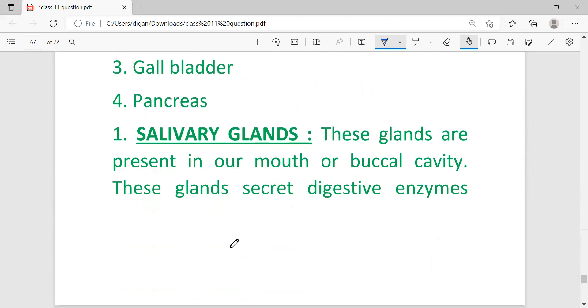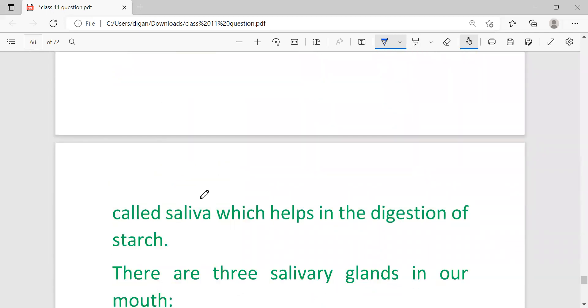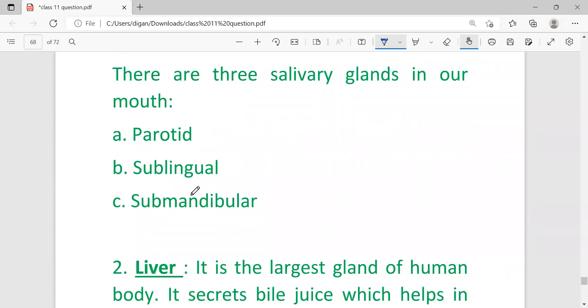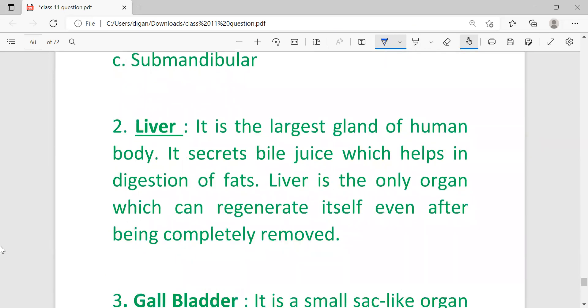Salivary gland: These glands are present in the mouth or buccal cavity. This gland secretes digestive enzyme called saliva which helps in digestion of starch. There are three salivary glands in the mouth.